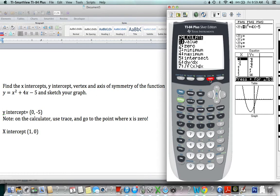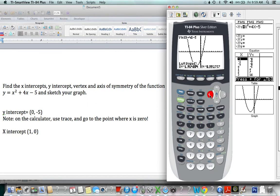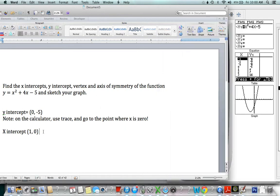So we go to second, trace, zero, because that point is called a zero. It says left bound, and we need to go all the way to the left of the other x-intercept. So now the x-intercept that we're looking for is here, and we're to the left of it. So we're good. So we press enter. Now we can go to the right of that point. And we press enter. And then it says guess. So we go close to the point. That's close enough. And we press enter. And it gives us the other x-intercept, which is negative five comma zero.